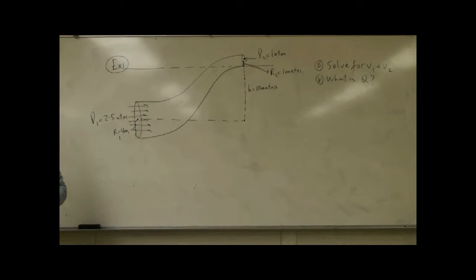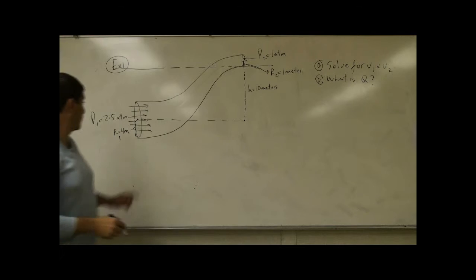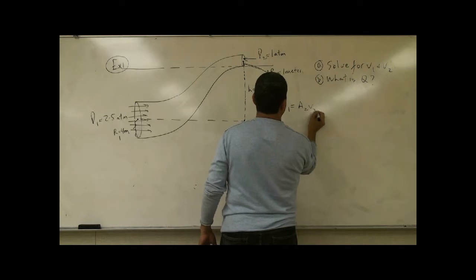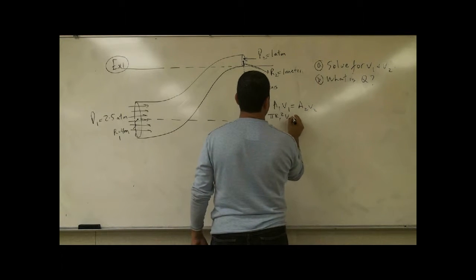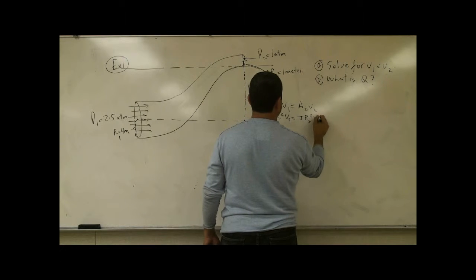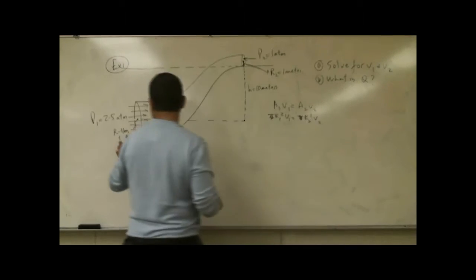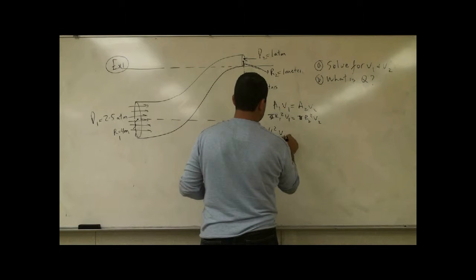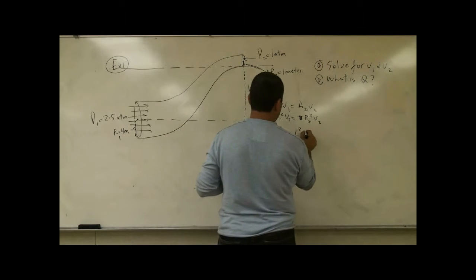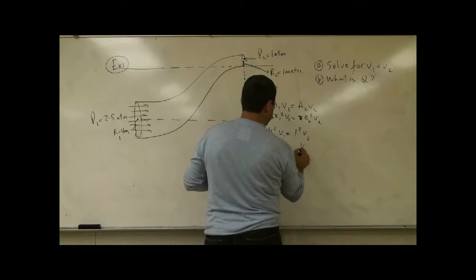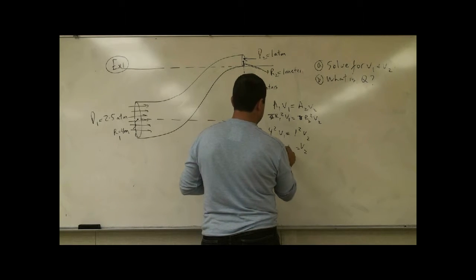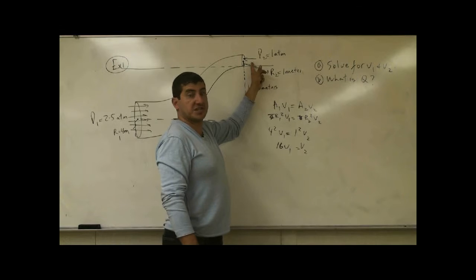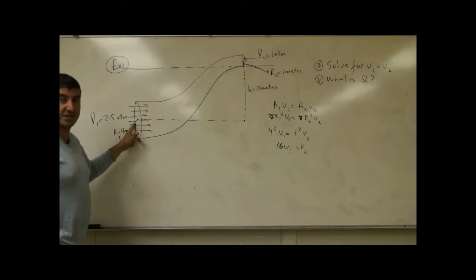So let's start out with the volume flow rate continuity equation. We have A1 V1 equals A2 V2, pi times R1 squared V1, pi R2 squared V2. So pi pi cancels. So we have 4 squared times V1, which we don't know, is equal to this radius 1 squared V2. So we have V2 is equal to 16 V1. So now we know that the water has to come out here 16 times faster than whatever its velocity is here.